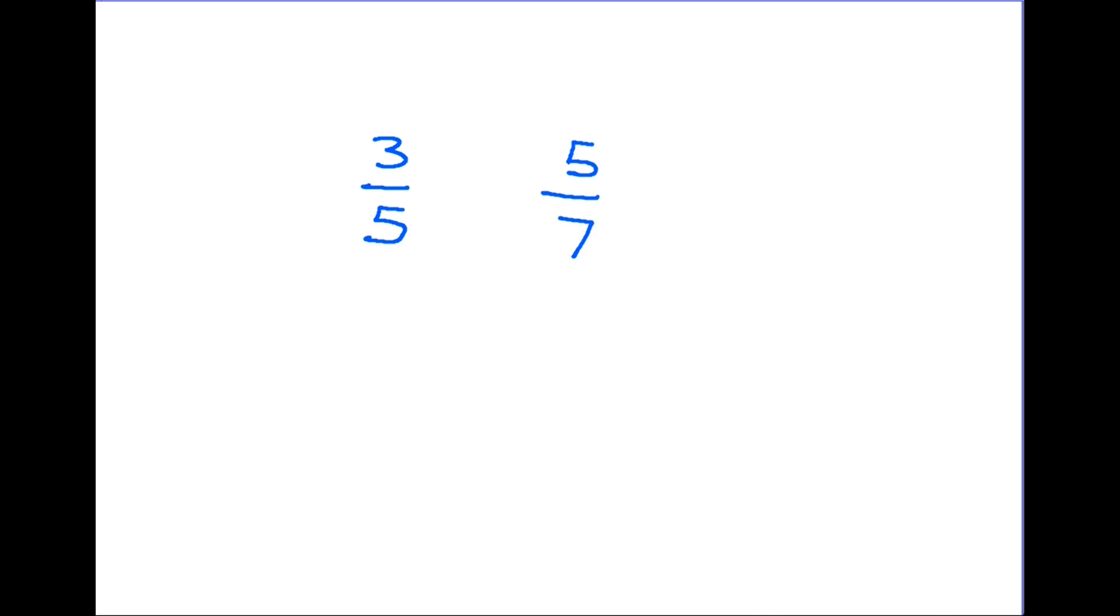Now the nice thing here is that there is a method that helps us to do this more quickly. Stage one is we look at the two bottom numbers and we multiply them together. So five times seven is 35. So what I want to end up with are two fractions that both have 35 on the bottom like that.